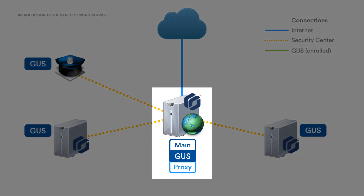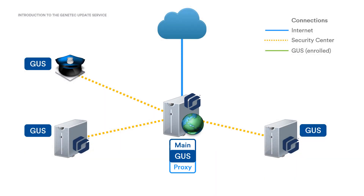The first configuration is to be a main GUS. If the machine has a Security Center directory installed, it will automatically be configured as a main GUS. The main GUS is used to accept or reject machines that are pending enrollment, and once enrolled, these machines can receive software updates that have been downloaded on the proxy machine. The main GUS is also responsible for pushing notifications to these machines to start the update process.